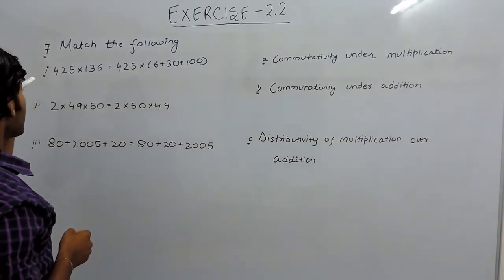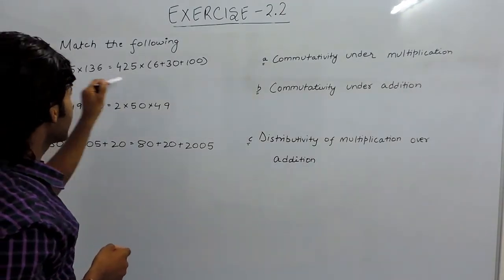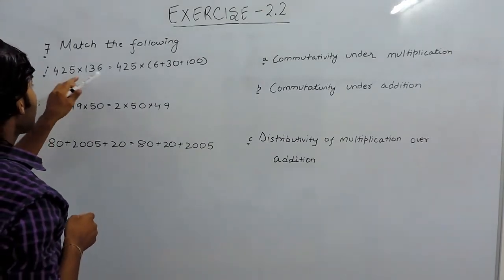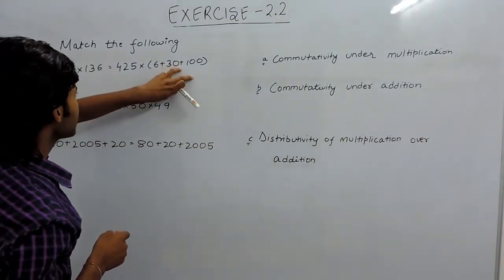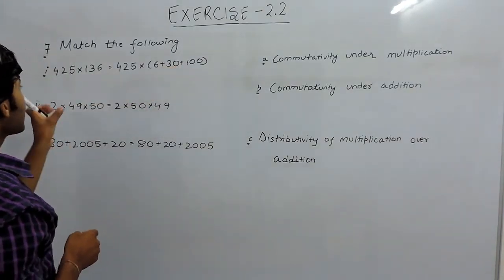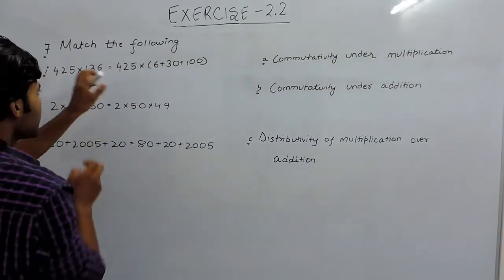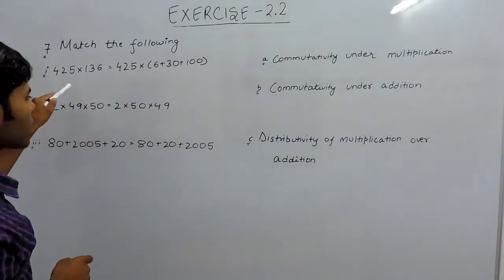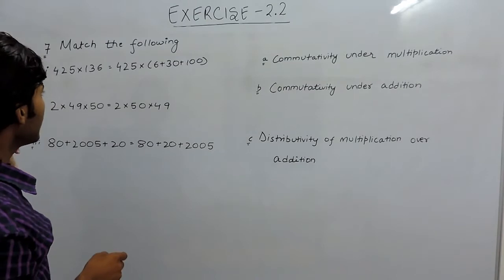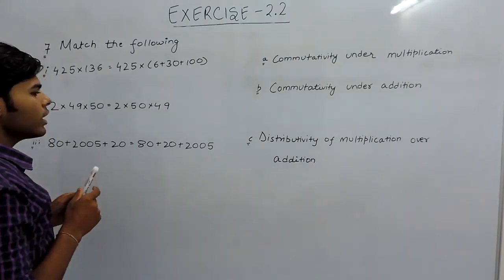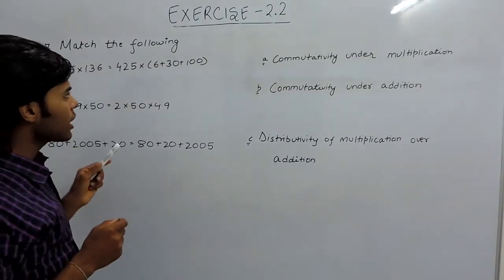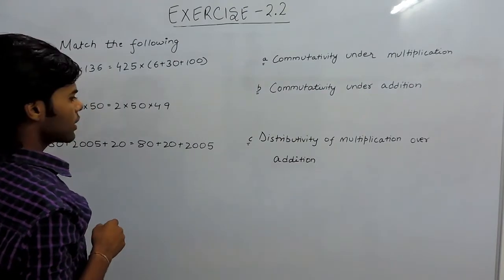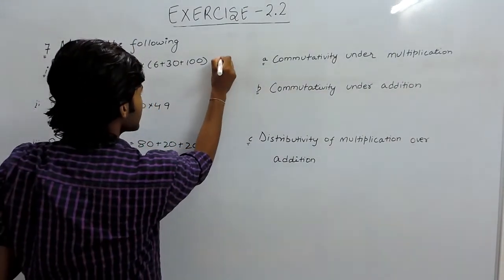In the first part, this is given, and if we write 136 like this — that is, if we break any of the two numbers in this form, or in the form like 400 plus 20 plus 5 — then this is called distributivity of multiplication over addition. The answer to the first part is C.